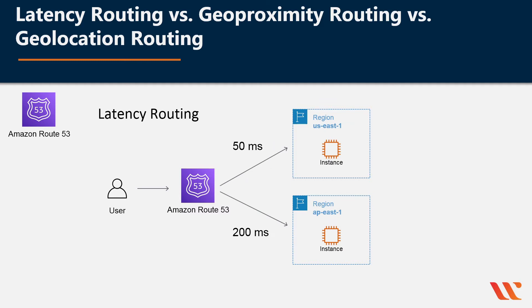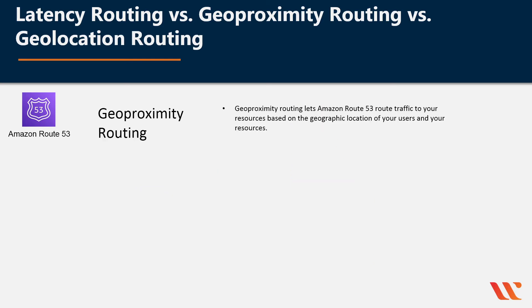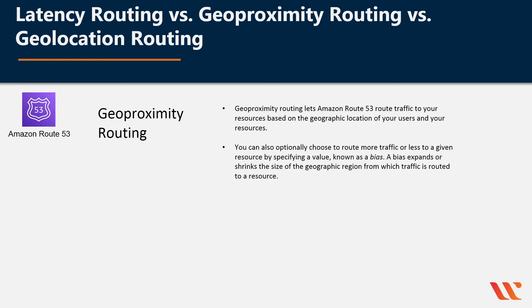Latency routing was pretty straightforward. Let's take a look now at geoproximity routing. Geoproximity routing lets Amazon Route 53 route traffic to your resources based on the geographic location of your users and your resources. You can also optionally choose to route more or less traffic to a given resource by specifying a value known as a bias. A bias expands or shrinks the size of the geographic region from which traffic is routed to a resource. To use geoproximity routing, you must use Route 53 Traffic Flow.